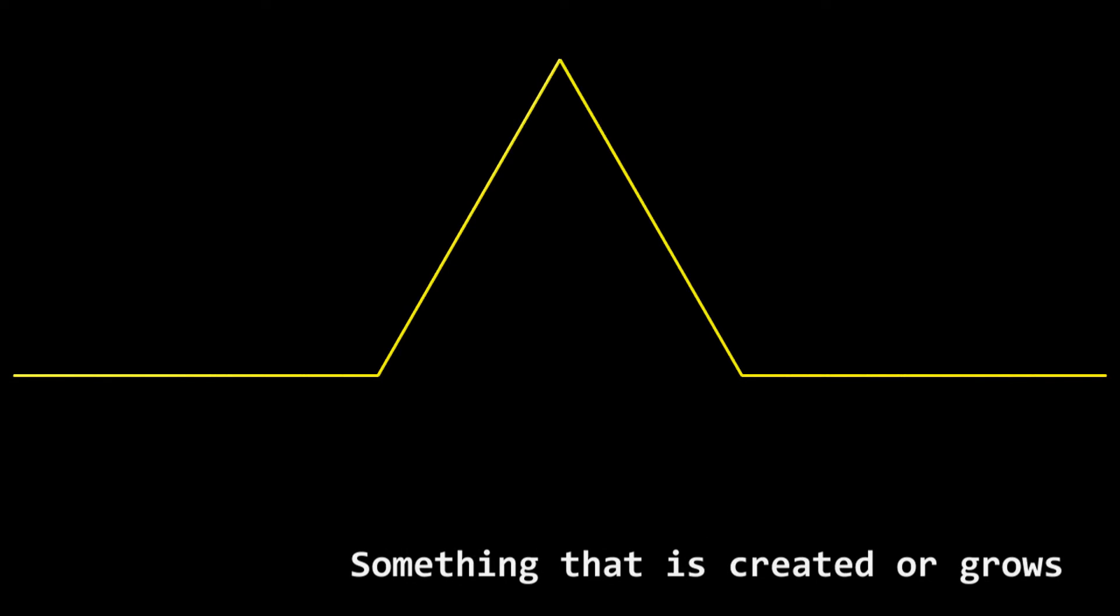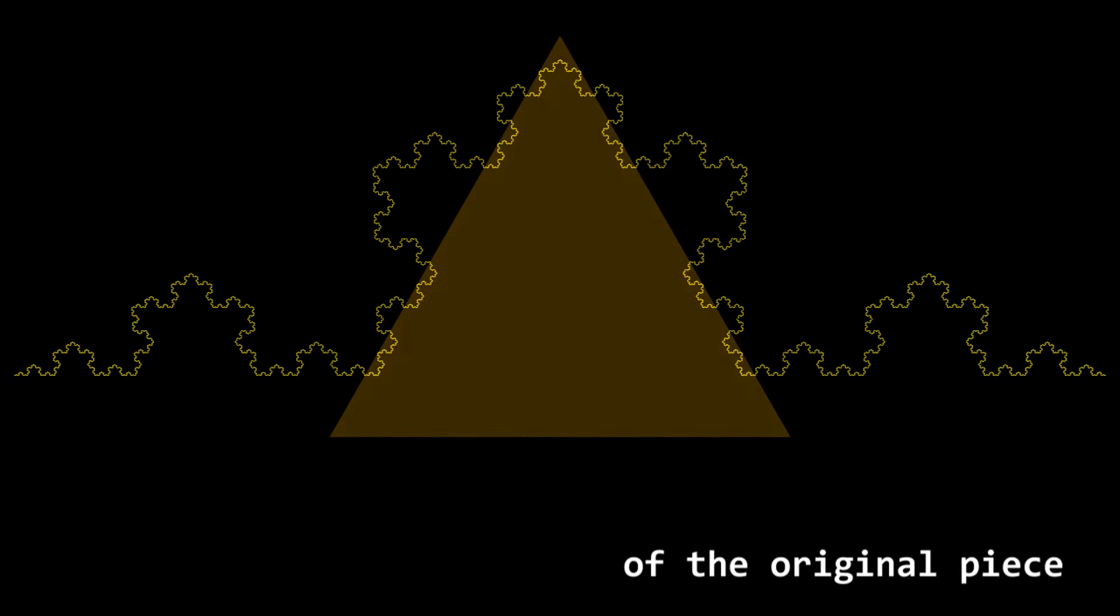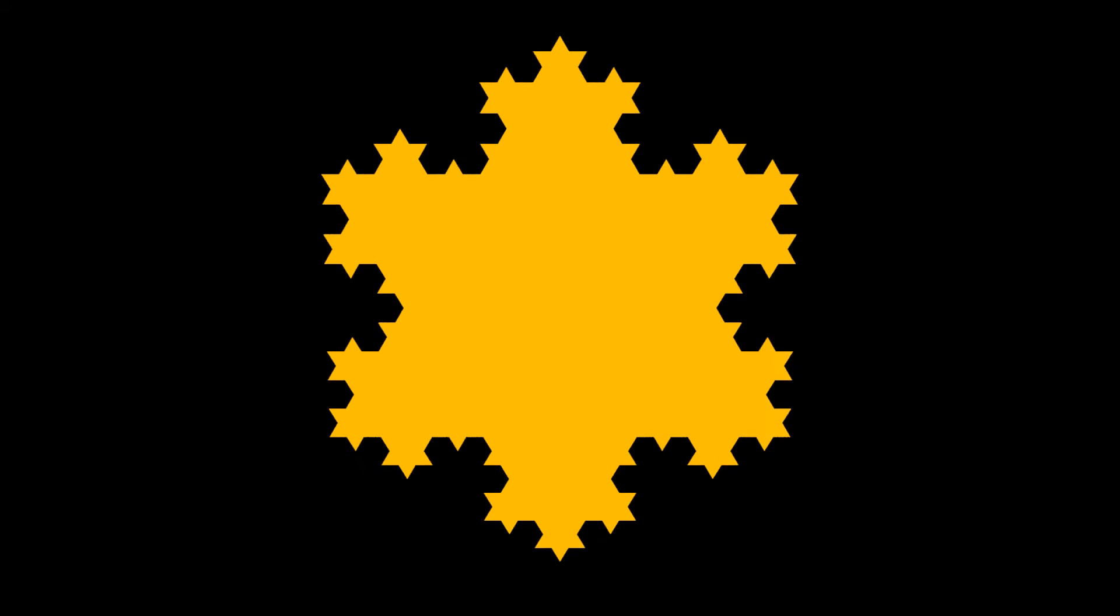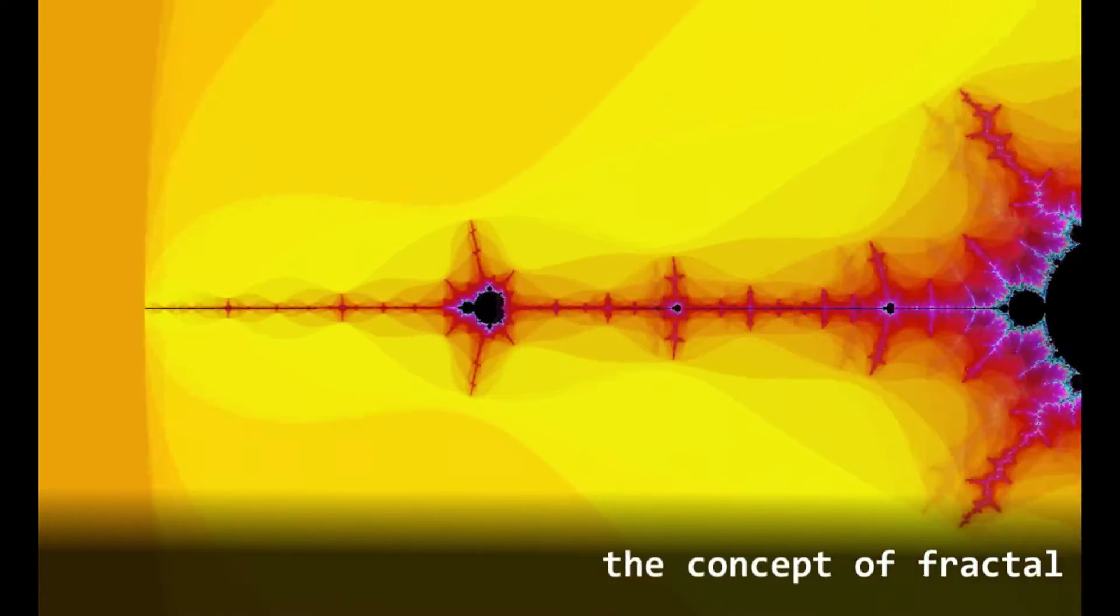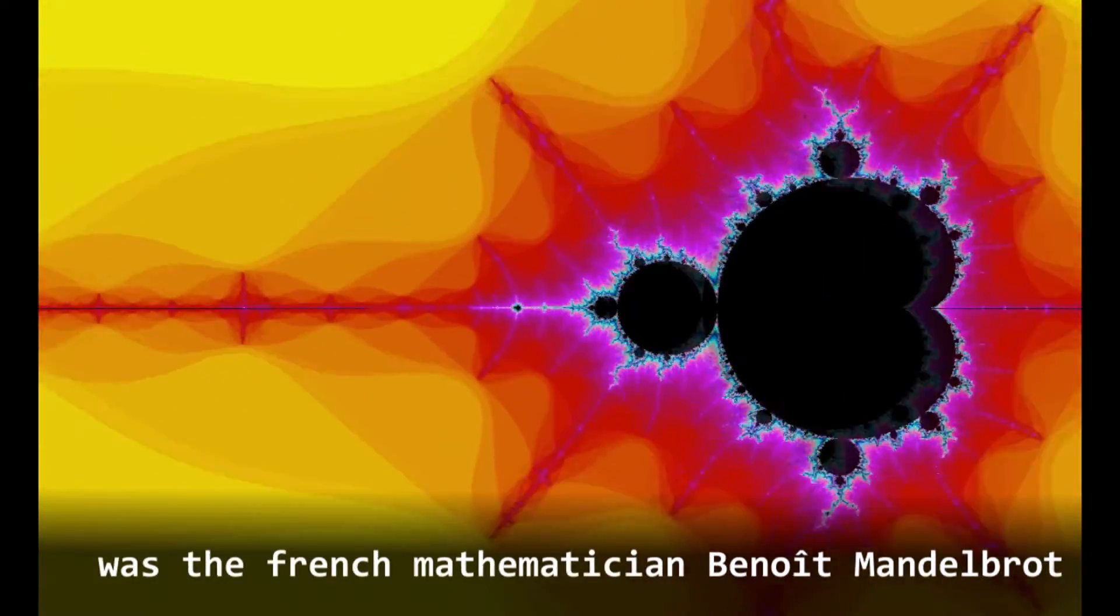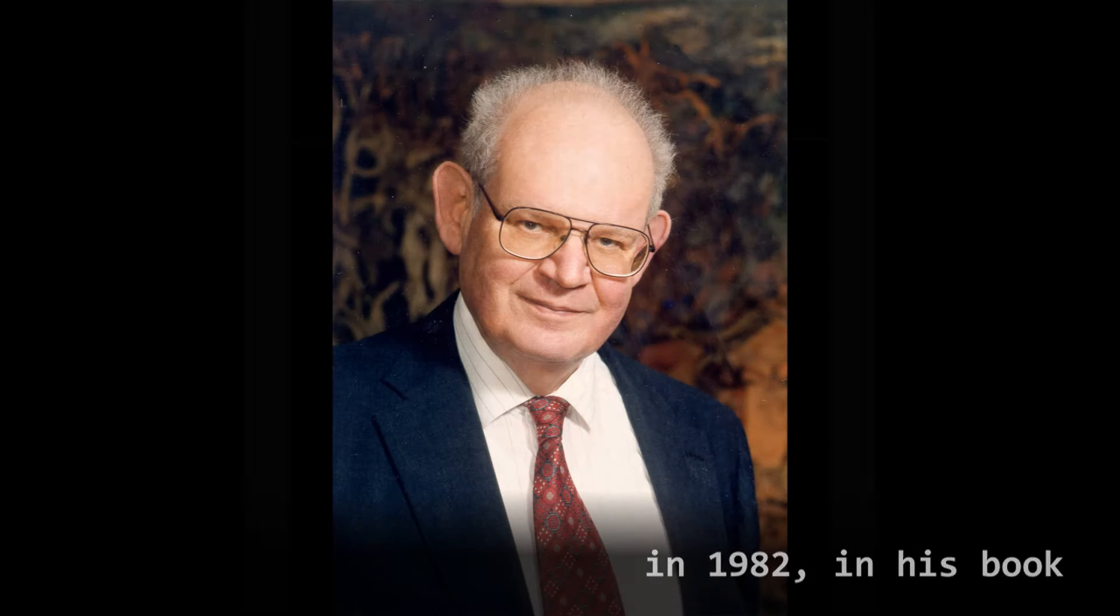Something that is created or grows, making similar but small copies of the original piece. The first one to propose to the public the concept of fractal was the French mathematician Benoit Mandelbrot in 1982, in his book, The Fractal Geometry of Nature.